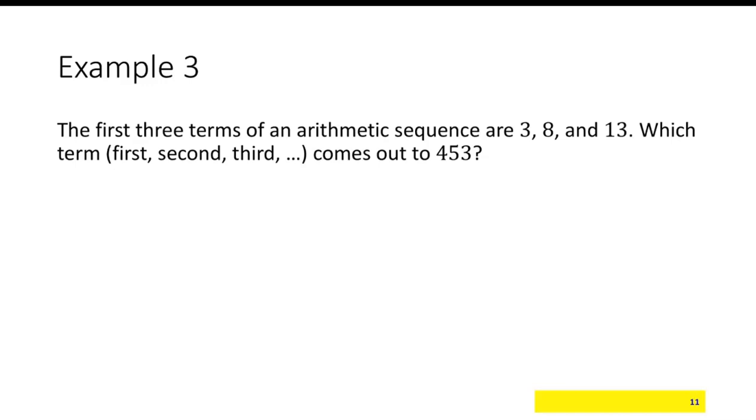Let's say the first three terms are 3, 8, and 13. So a 1 is 3, a sub 2 is 8, and a sub 3 is 13. And notice that the difference would be 5. 3 plus 5 is 8, 8 plus 5 is 13.